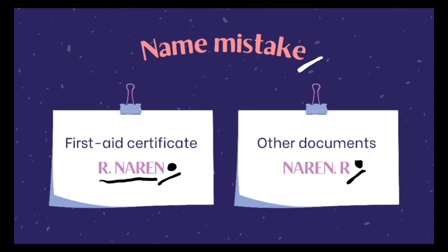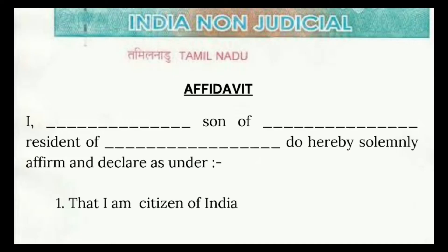Now I need to submit to DGMS an affidavit from an advocate or notary public stating that R. Narain and Narain R are the same person, and I have to request DGMS to kindly accept the certificate and release my competency certificate.